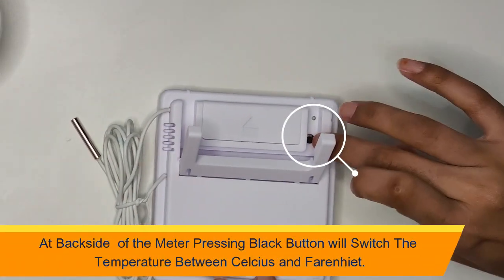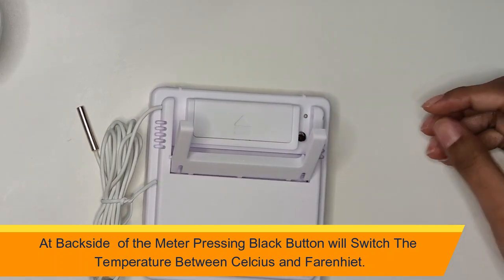At the backside of the meter, pressing the black button will switch the temperature between Celsius and Fahrenheit.